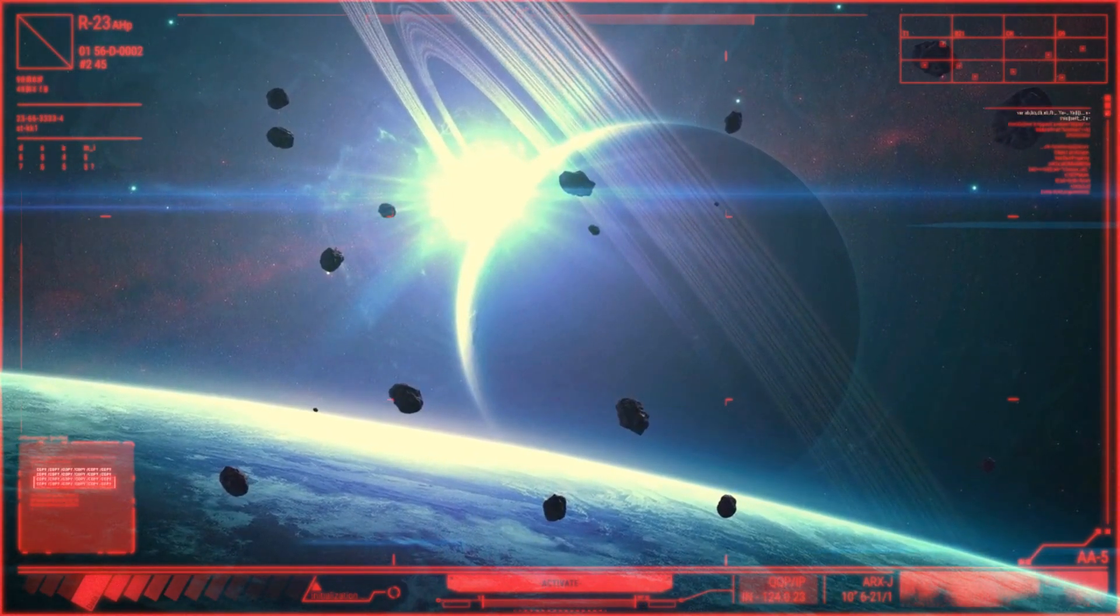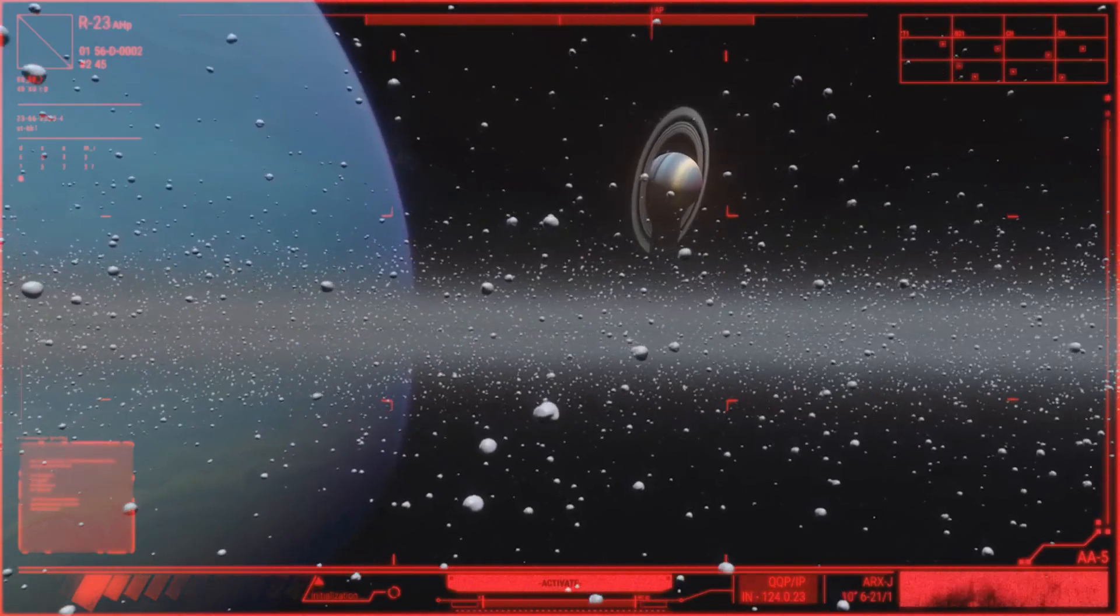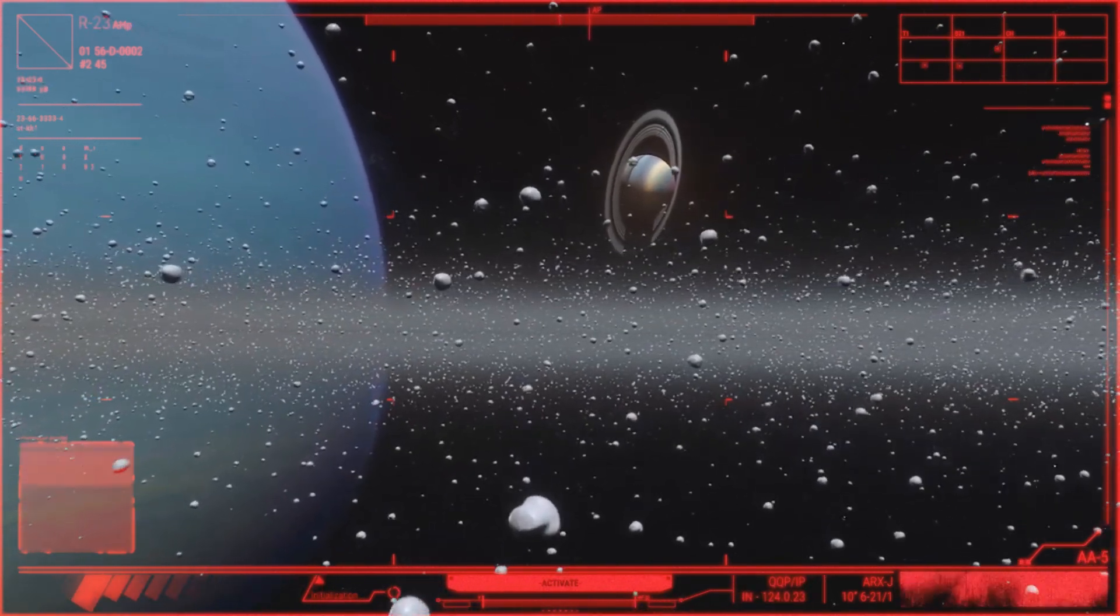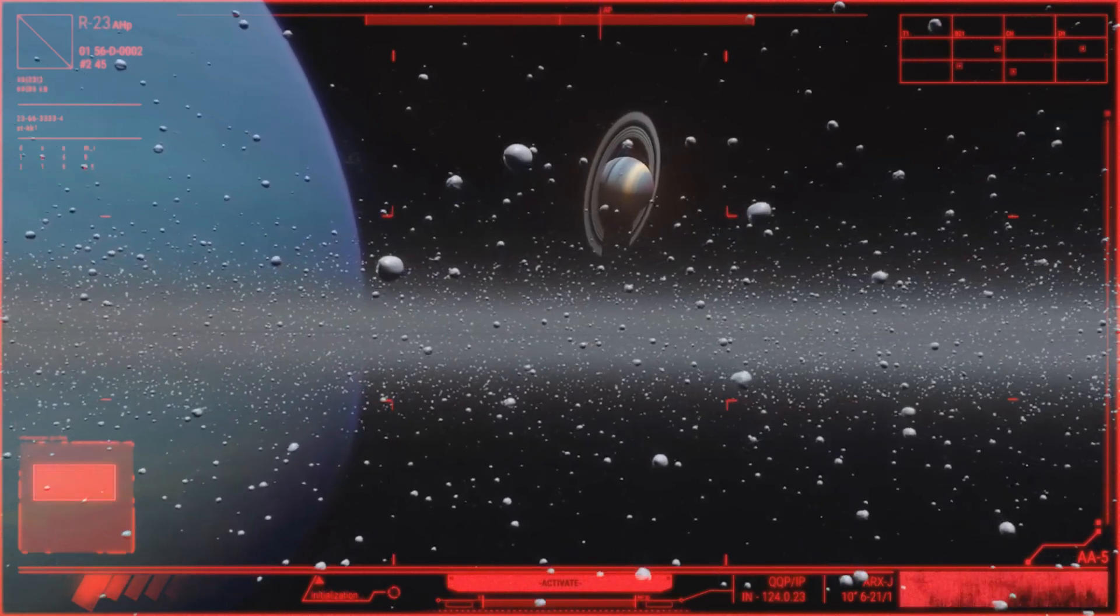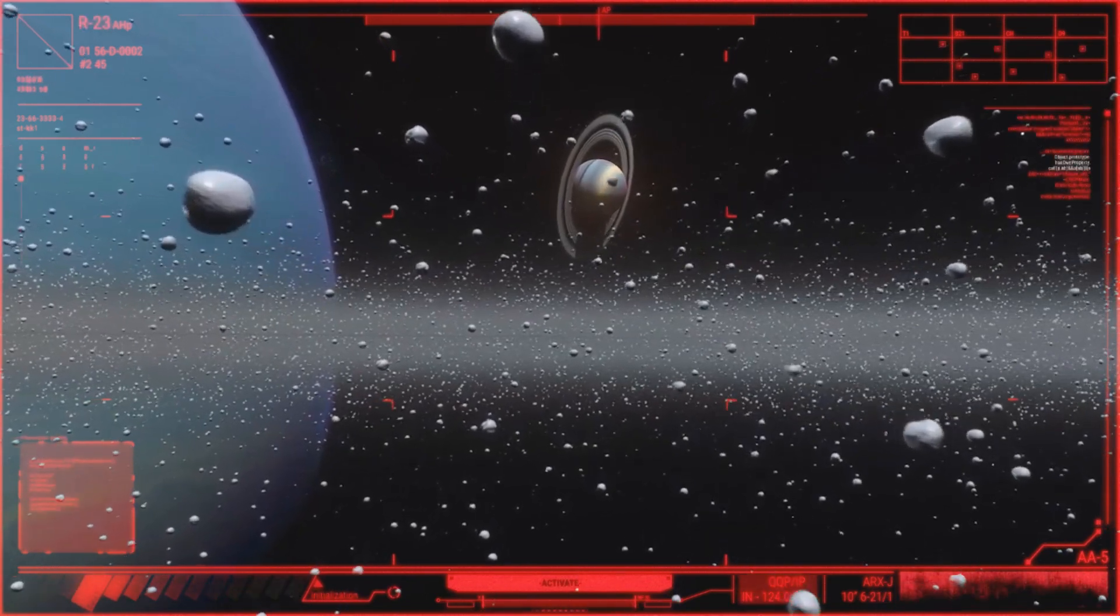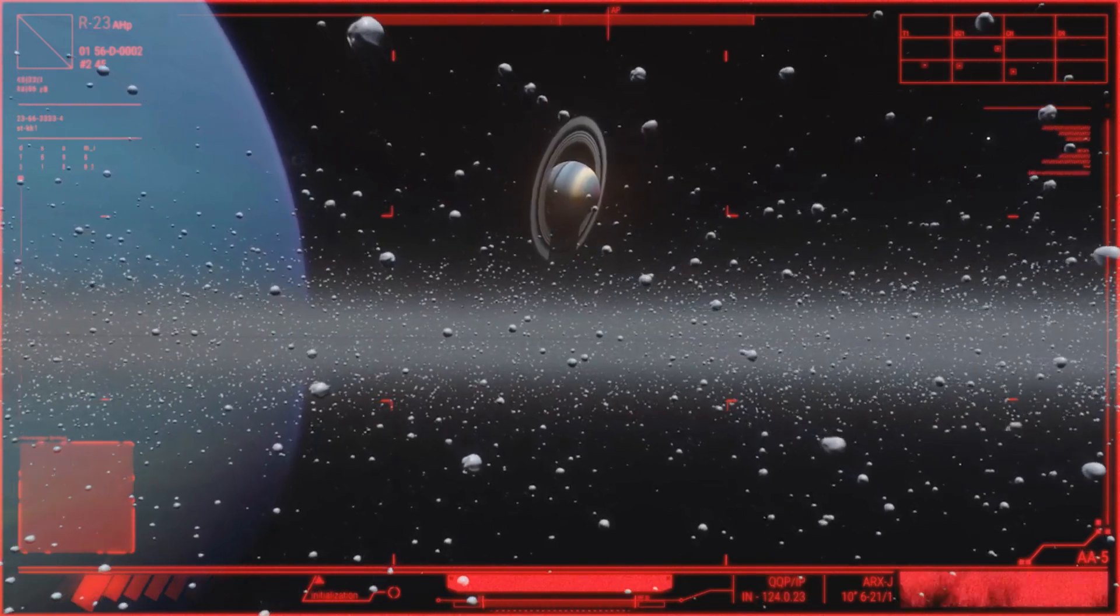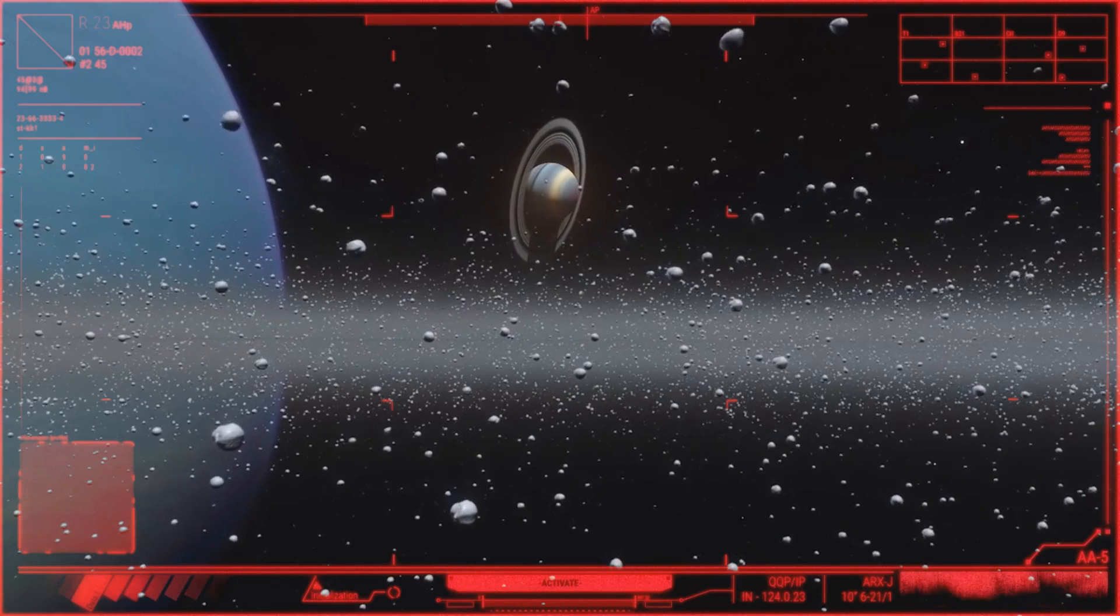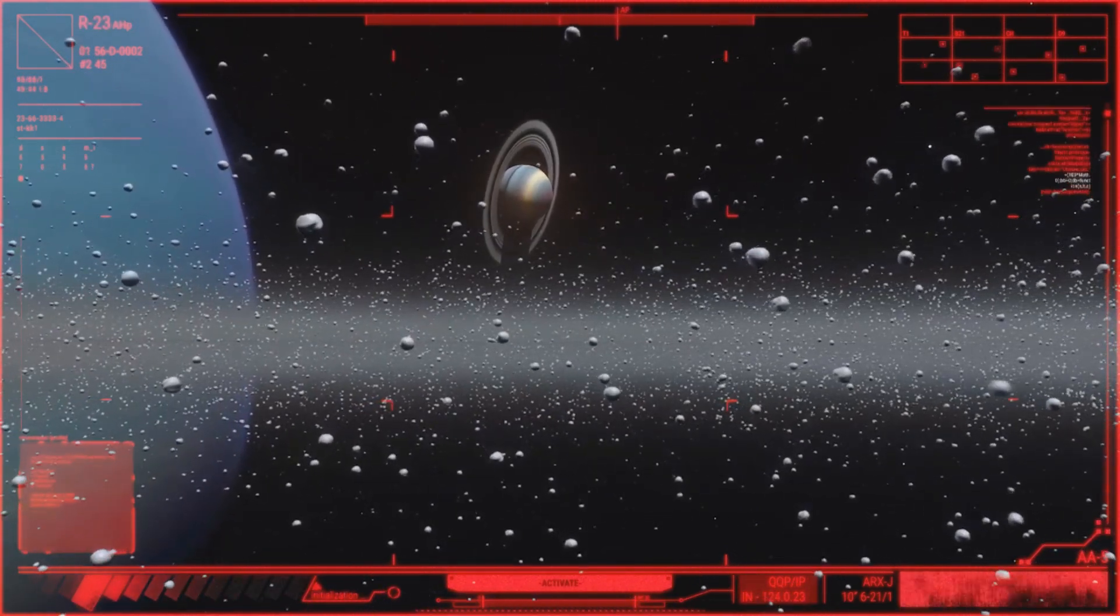Jupiter. Jupiter is the fifth planet from the Sun and the largest planet in the solar system. It consists mainly of gases, predominantly hydrogen and helium. Jupiter is also known for its powerful atmospheric storms, the most famous of which is the Great Red Spot. The distance from Jupiter to the Sun is about 778.3 million kilometers. Fun fact: Jupiter has the largest moon system in the solar system, including its largest moon, Ganymede, which is the largest moon in the solar system.